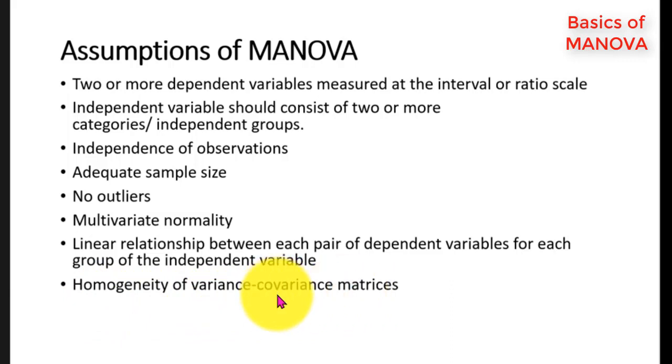The homogeneity of covariance can be checked using box M statistics in the SPSS. Whereas, the homogeneity of variance can be checked using Levin's test of homogeneity. And there should not be any multicollinearity in the data set. The problem of multicollinearity arises when there is a high degree of correlation between variables.